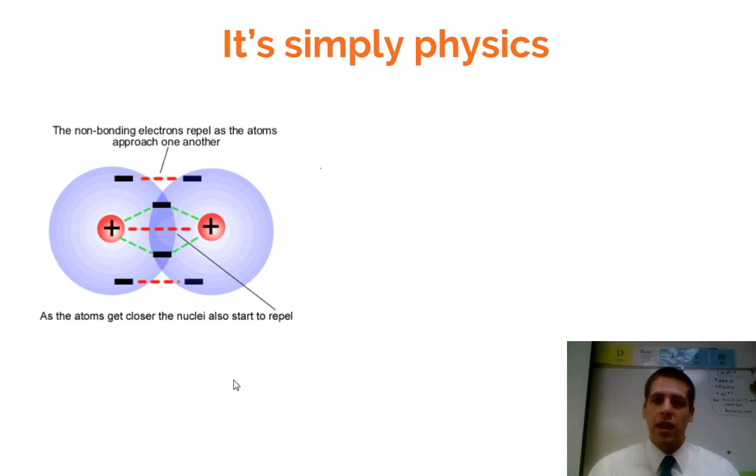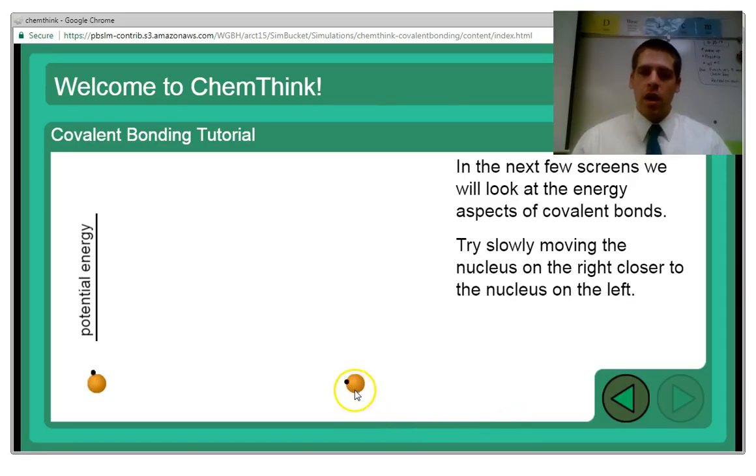We can actually look at a graph that kind of shows this. So here we have two hydrogen atoms, each with their own one electron, and they're completely separate. So they're not forming a bond. We just have the individual H atoms. Now these aren't really that stable, because they just have the one electron.